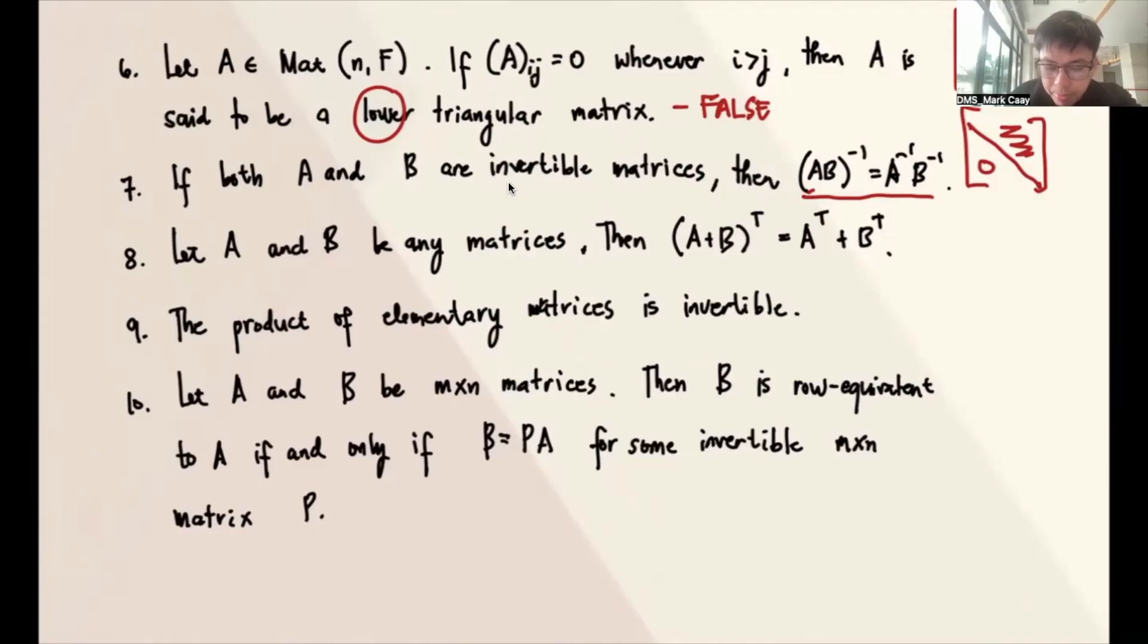Number eight, let A and B be any matrices. These are of the same size, by the way. And the transpose of the sum is equal to the sum of the transpose. This is easy. In fact, if your A is Aij, your B here is Bij, same size. The transpose is Aji and Bji.